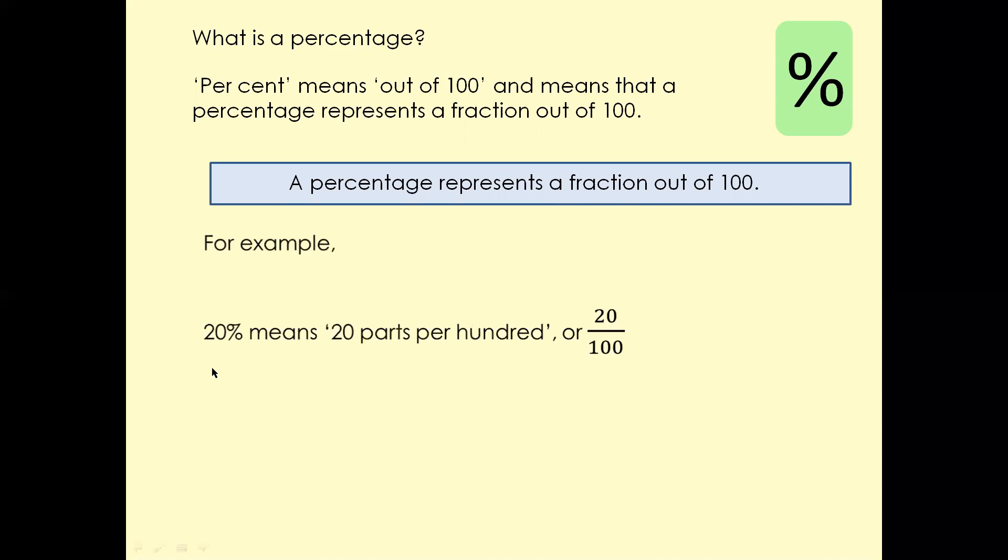Let's have a look at this example. 20% means 20 parts per 100, so 20 parts per 100. 85% means 85 parts per 100. And 3% means 3 parts per 100.